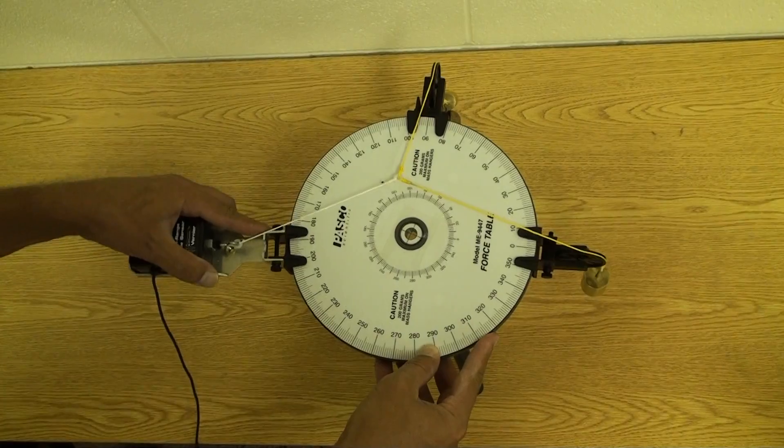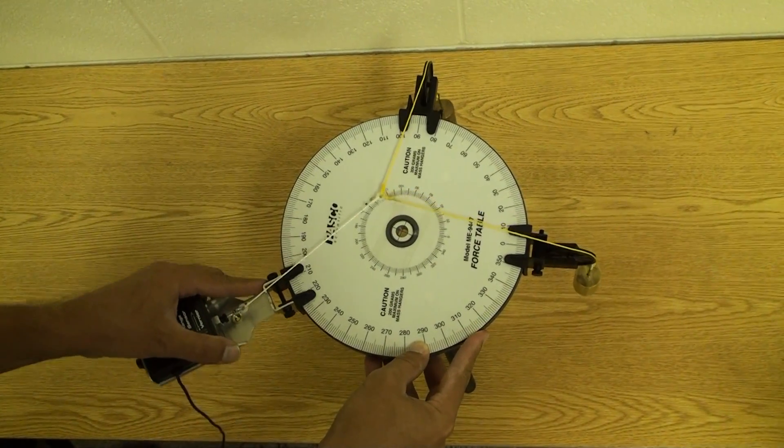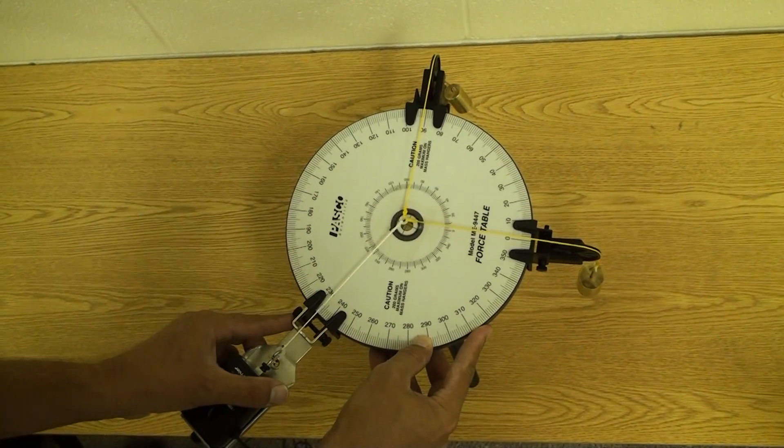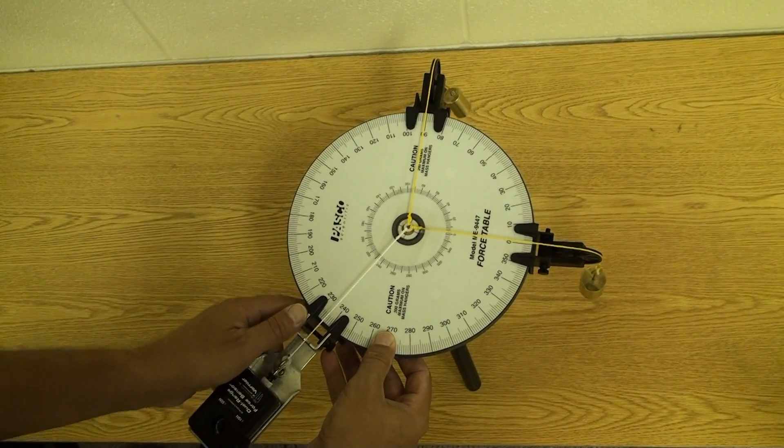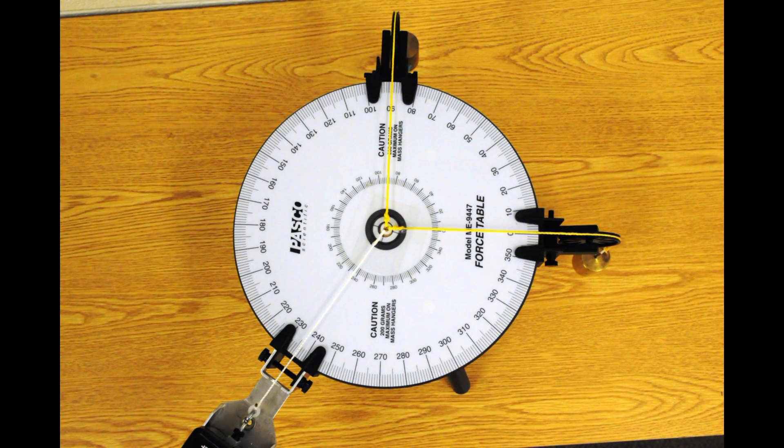The third counterbalancing force required to keep the central point in equilibrium is provided by the string to the force sensor. In this bird's eye view, you see the force F1 with magnitude m1g pointing to the right along the x-axis, F2 with magnitude m2g pointing along the y-axis at 90 degrees, and the string tension from the force sensor balancing them both. Make sure that the intersection of the three strings is in the dead center of the force table.